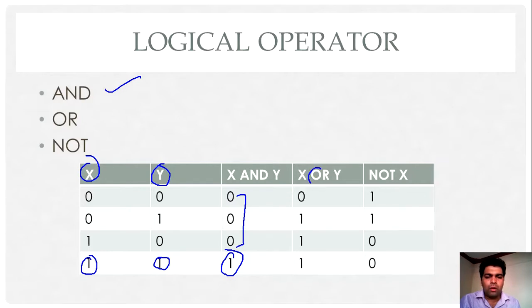While in case of OR, it will return true if any one of X and Y value is true. If both are false, then only X OR Y returns false.